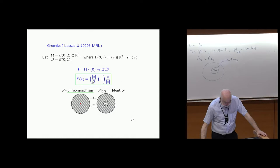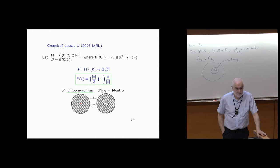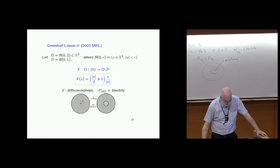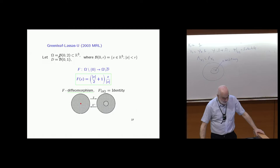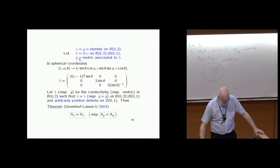Blowing up the point gives this transformation, collapsing the ball gives the inverse. There is one difference with Pendry's paper: they call the outer ball radius R_2 and the inner ball radius R_1, while we call them 2 and 1. Besides that, there's no difference. You can write it down explicitly, giving the conductivity — or electromagnetic parameters — of the cloak. You take the identity and take the push-forward, and in spherical coordinates this is the explicit form.